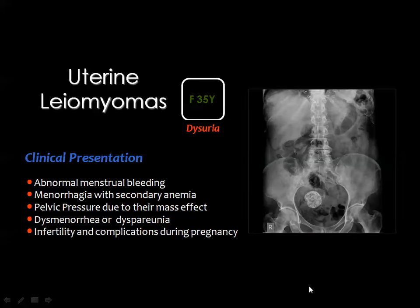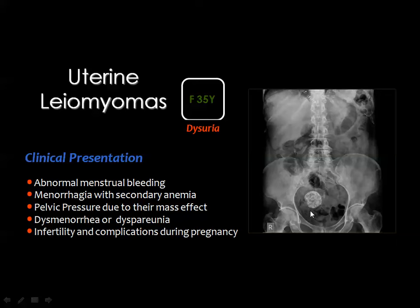The clinical presentation of uterine fibroids includes abnormal menstrual bleeding, menorrhagia with consequent anemia, and pelvic pressure symptoms when the fibroid is large — compressing the urinary bladder or rectum. Sometimes fibroids may interfere with or cause complications during pregnancy. Uterine fibroids can be diagnosed on plain X-ray if a calcified pelvic mass is seen in a female patient.